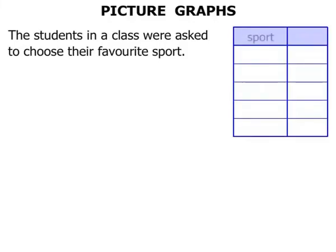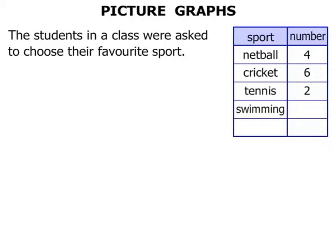The sport and the number of students who chose each one. The various sports: Netball — there were four people who chose that. Cricket — six people chose that. Tennis — there were two people who chose that. Swimming — three people. And football — eight people chose football.